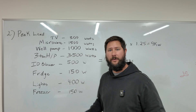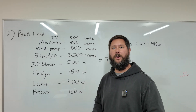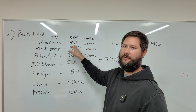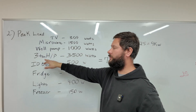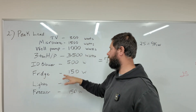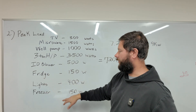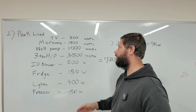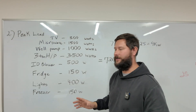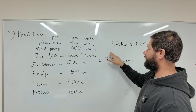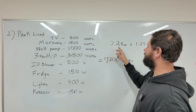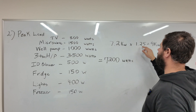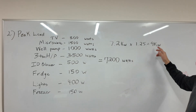Now let's figure out our peak load — how many kilowatts we're using all at once. Here's a real life example: TV 300 watts, microwave 1,500 watts, well pump 1,000 watts, three-ton heat pump 3,500 watts, indoor blower 500 watts, fridge 150 watts, freezer 150 watts, lights 400 watts. This is what a three-bedroom single-family home is using all at once during the day. We add all those together to get our peak load of 7,200 watts, or 7.2 kilowatts.